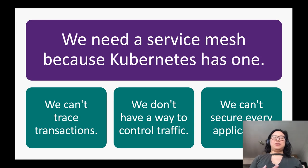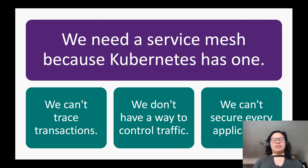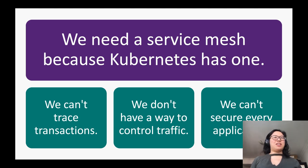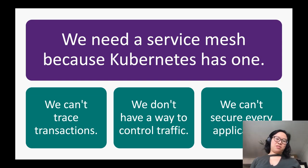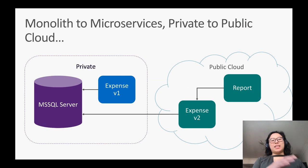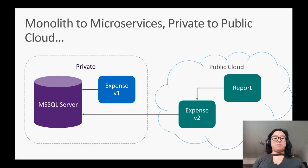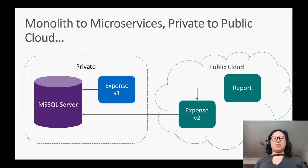Another reason was that we needed a service mesh because Kubernetes has one. We were running partly in Kubernetes and partly in a private data center. But the service mesh in Kubernetes, specifically Istio, doesn't really stretch — it doesn't go to the private data center. With this premise in mind, we're going from monolith to microservices, from private to public cloud, or running in both. So how do you gain visibility and traffic control across all of these?